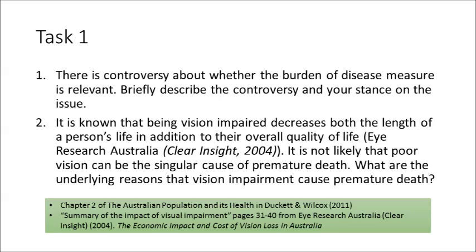Question 1: There is controversy about whether the burden of disease measure is relevant. Briefly describe the controversy and your stance on the issue. Question 2: It is known that being vision impaired decreases both the length of a person's life in addition to their overall quality of life. It is not likely that poor vision can be the singular cause of premature death — what are the underlying reasons that vision impairment causes premature death? I'd like you to not only answer the questions but, as with all tasks, discuss in your group.